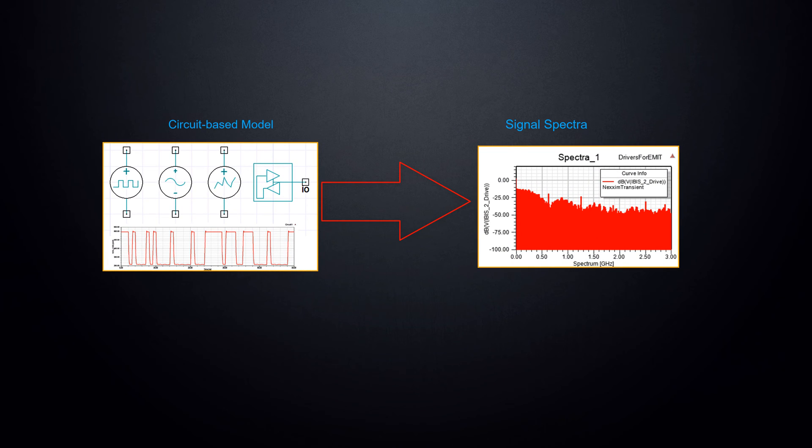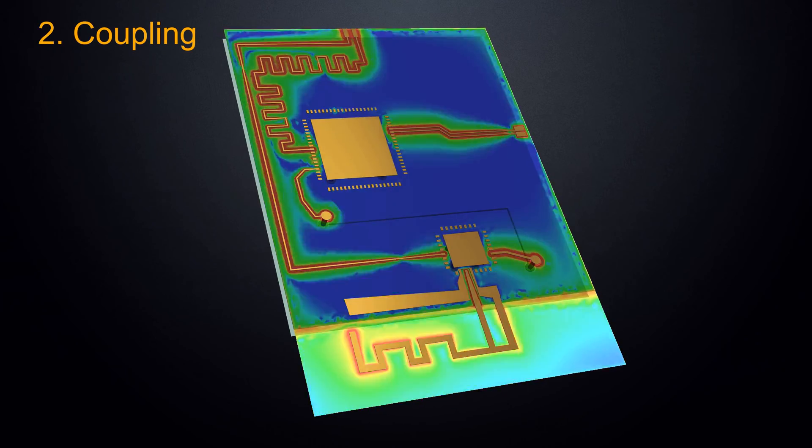EMIT allows for continuous enhancement as better data becomes available during the design process. So, if a vendor IBIS model is available, it may be used in conjunction with the transient circuit analysis allowing the spectra to be extracted and used in lieu of the EMIT behavioral model.